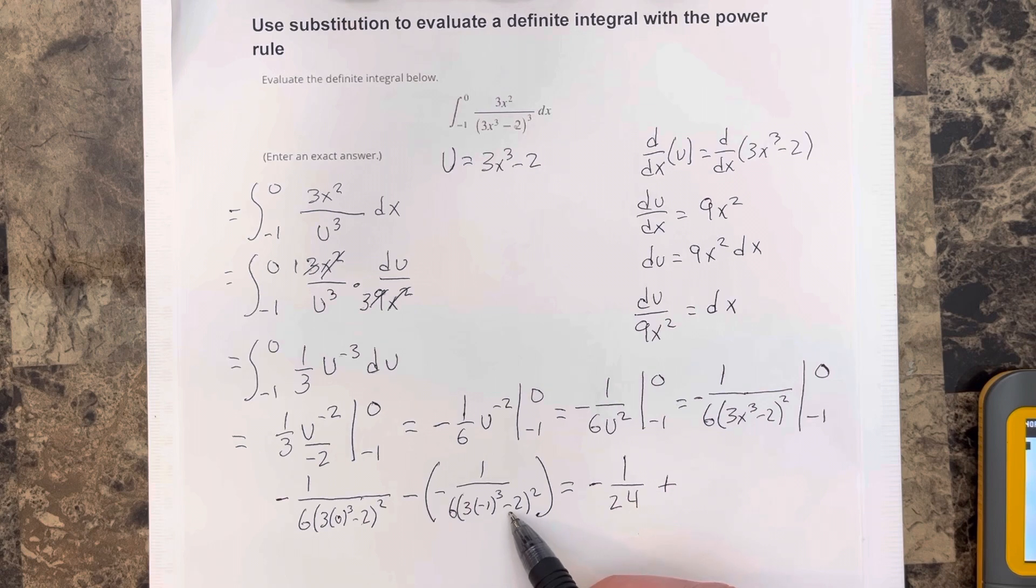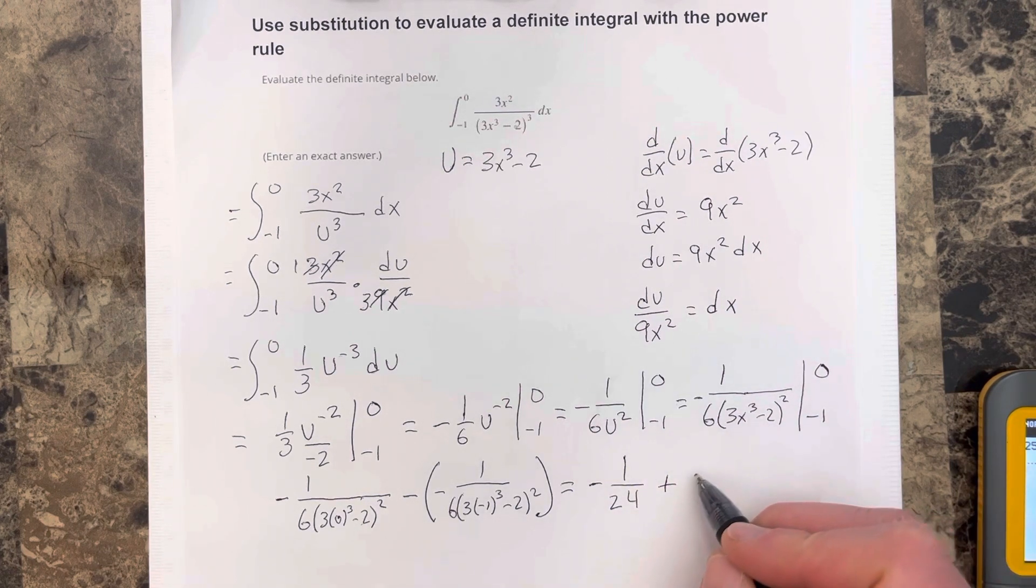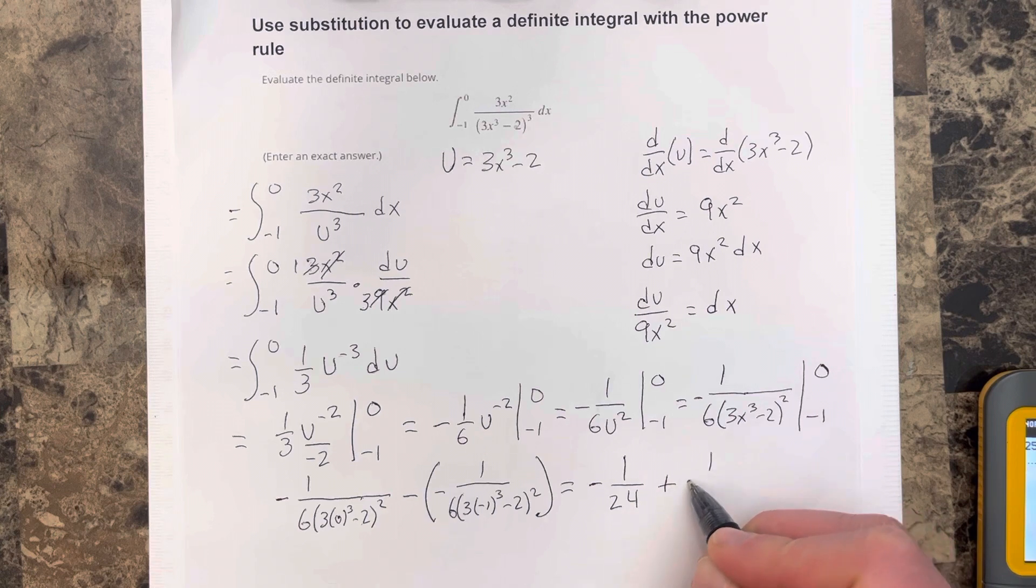Negative 3 minus 2 is negative 5. Square that, that's 25. So you have 25 times 6. You get 150. So this would be actually plus 1 over 150.